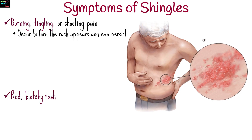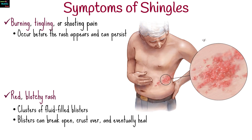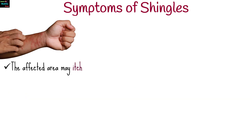A red, blotchy rash usually appears a few days after the pain begins. The rash typically develops into clusters of fluid-filled blisters. These blisters can break open, crust over, and eventually heal. The affected area may itch, especially as the rash heals.